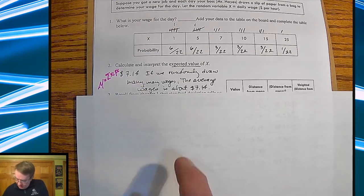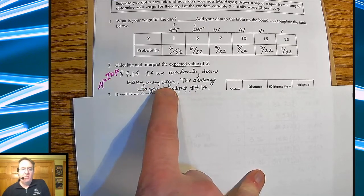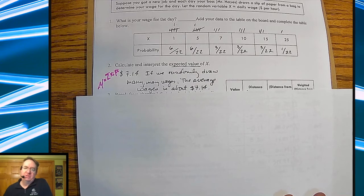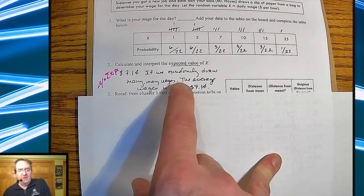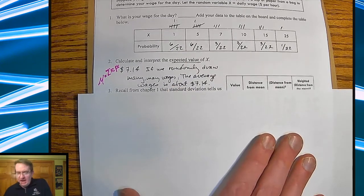And so what does that mean? If we randomly draw many, many wages, the average wage is about $7.14. Again, remember, it's going to be in the long term what's going to happen, and then also remember it's about, because it is an estimate.